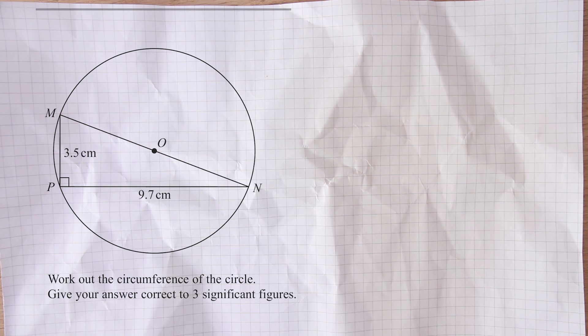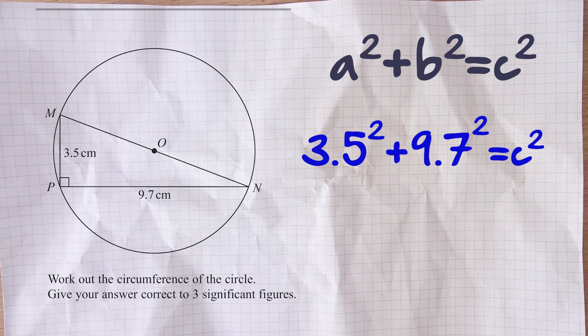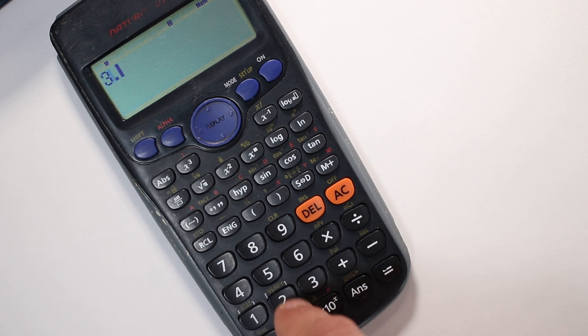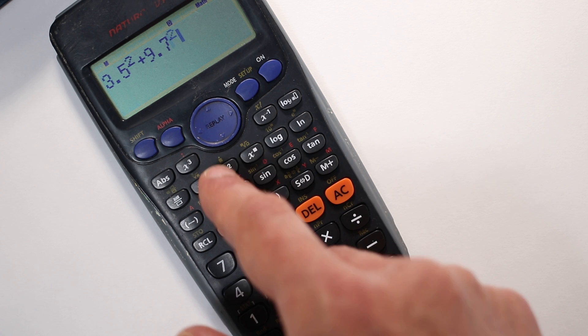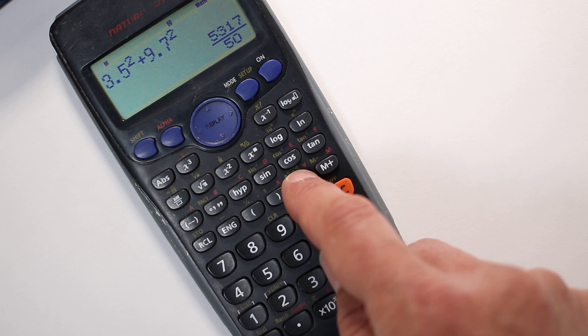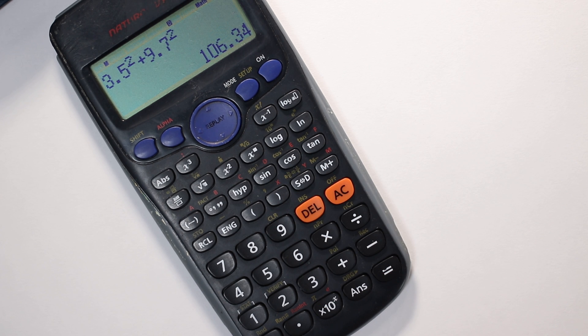We need to find out the hypotenuse of that triangle, and we can do that using Pythagoras. So we remember that Pythagoras, you need to do a squared plus b squared, and that will tell you what c squared is. c squared will be referring to the hypotenuse. So we need to do 3.5 squared add 9.7 squared, and that will tell us what the hypotenuse squared is. So let's do that. We've got 3.5 squared plus 9.7 squared, and we'll convert that to decimal, so it's 106.34.